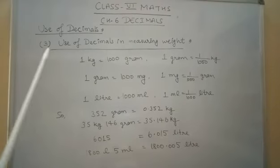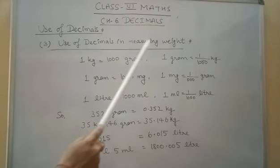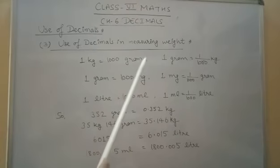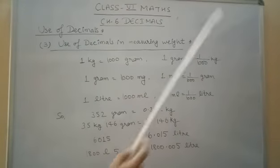Now student, we study third point: use of decimals in measuring weight. So we know that 1 kilogram is equal to 1000 gram, then 1 gram is equal to 1 upon 1000 kilogram.